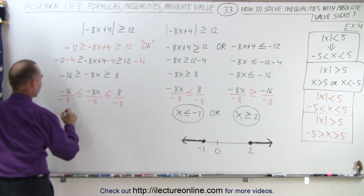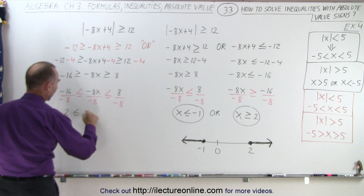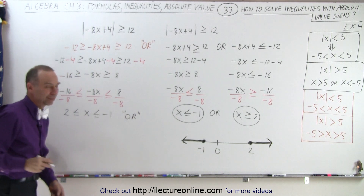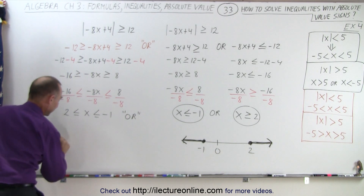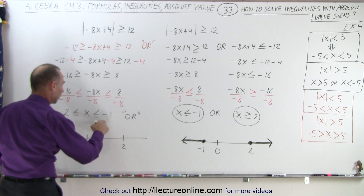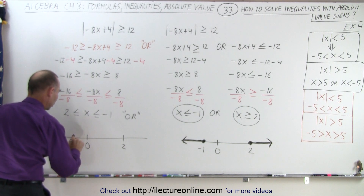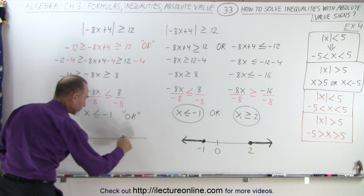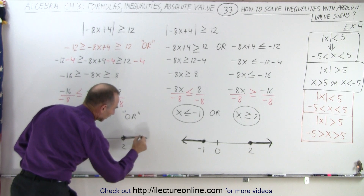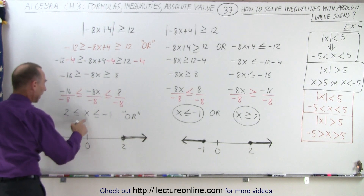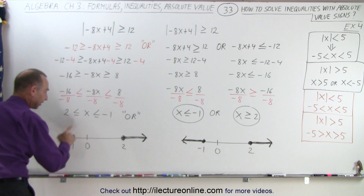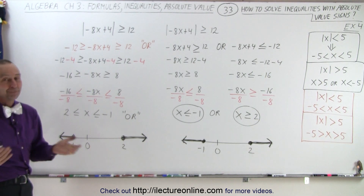When we simplify this, we get positive 2 less than or equal to x, which is then less than or equal to negative 1. Again, that's an OR condition, not an AND condition, because it can't be an AND condition. And if we then graph this, notice we have positive 2, 0, and negative 1. We have to include the endpoints, so we have solid circles. x greater than or equal to positive 2 means to the right, and x less than or equal to negative 1 means to the left from here. And of course, we should end up with the exact same result as what we have over there. And that is how it's done.